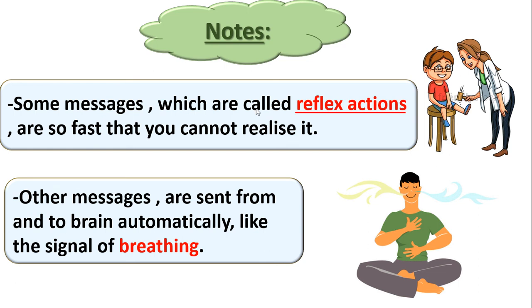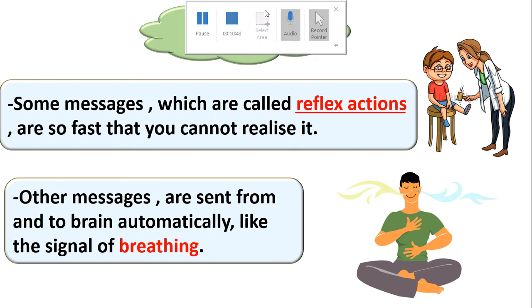There are also other messages that the brain sends automatically all the time. Like breathing — we can make many things in our body with the nervous system. The breathing message goes automatically from your brain to your body without even thinking. With you was Miss Noura Abdurrahman — thank you for listening.